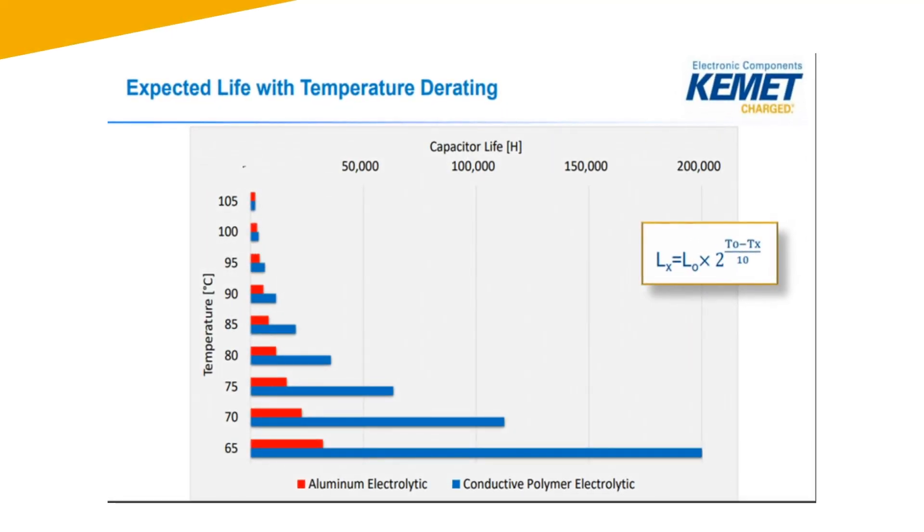Now that we know what end-of-life means, can you tell us what factors really impact this? The life is strongly dependent on three things: temperature, voltage, and ripple current. Can you tell me more about how temperature affects it? Absolutely. The loss of electrolyte in aluminum electrolytic capacitors is due to a chemical reaction within the capacitor. The speed is dependent on temperature and is consistent with Arrhenius law, which basically states that with every 10°C drop in temperature, the life of the aluminum electrolytic capacitor will actually double.